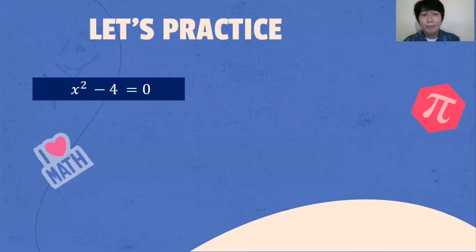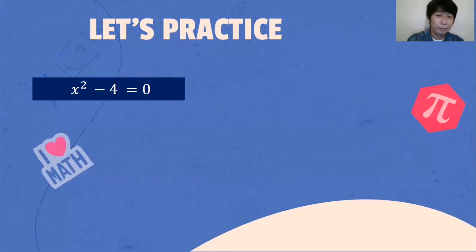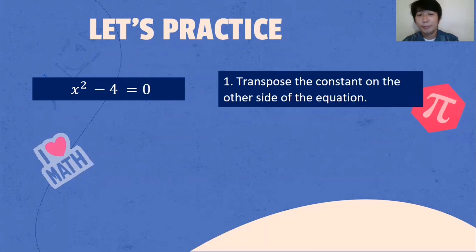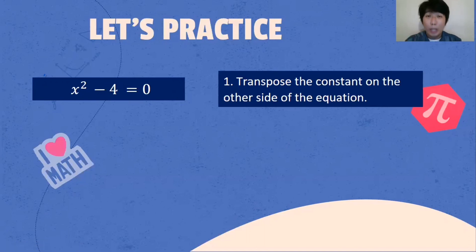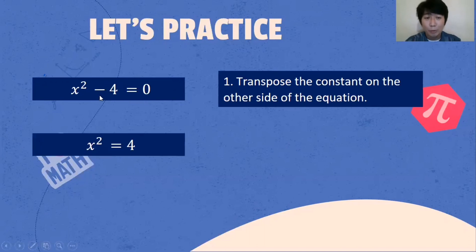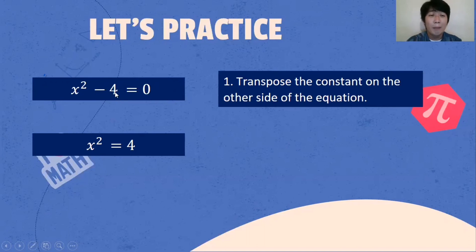Let's practice. Given X squared minus 4 is equal to 0, what is the first step? The first step is to transpose the constant on the other side of the equation. Always remember, when we are transposing one term from one side to the other side, that sign will be changed. So from negative, that will become positive.